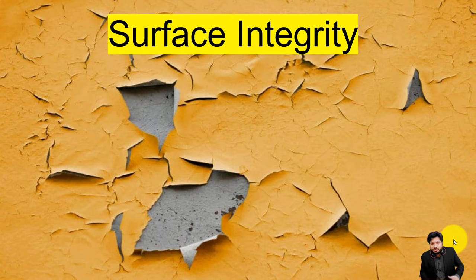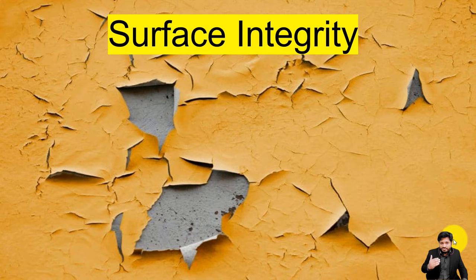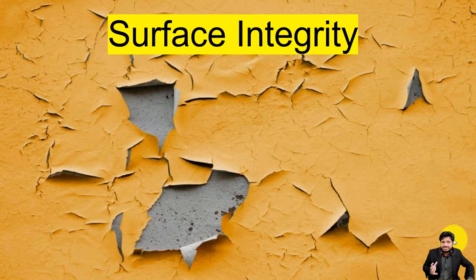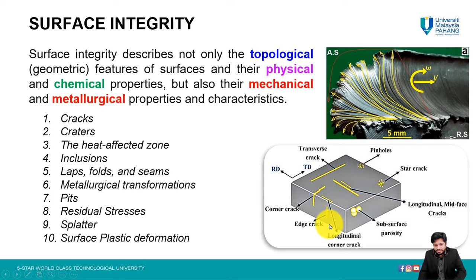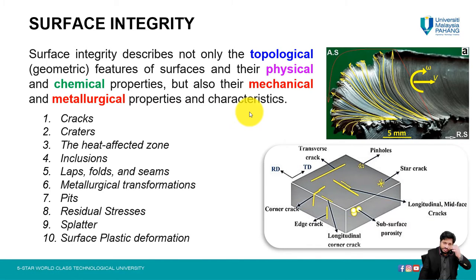Now let's take a look at surface integrity. As shown in this picture, some defects are visible. Surface integrity refers to important aspects and considerations that occur in manufacturing operations, and it affects properties such as fatigue strength, corrosion, and service life of a material. Surface integrity includes topological, physical, chemical, mechanical, and metallurgical transformations and properties that occur during the lifetime of a surface.